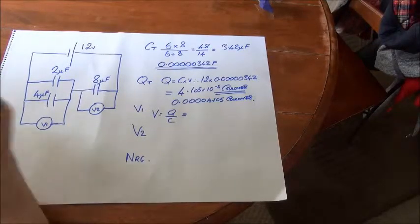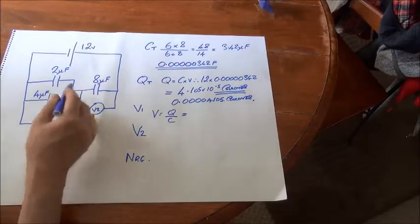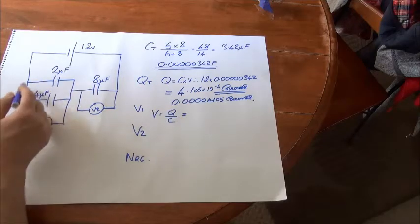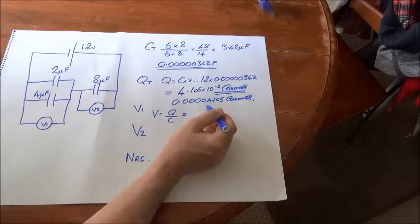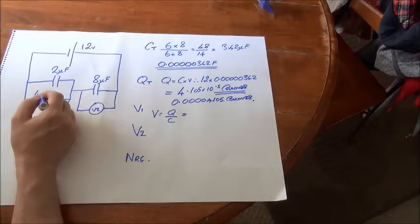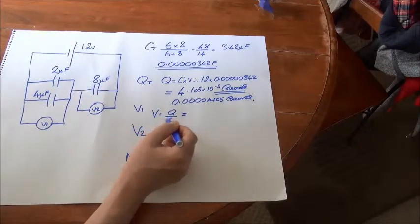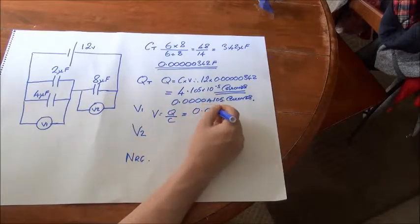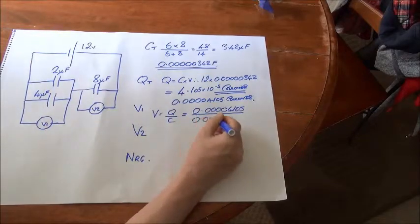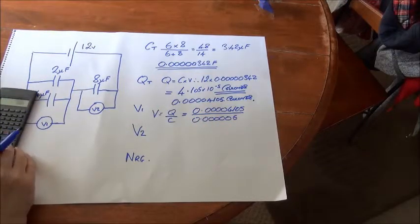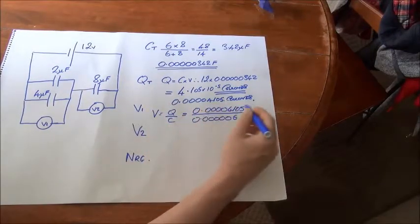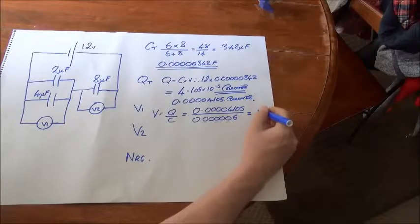We can use this fact to find voltages V1 and V2, and we'll start with V1. We know the charge for both these capacitors is 41 microcoulombs, and we know the total capacitance for both of these is 6 microfarads.